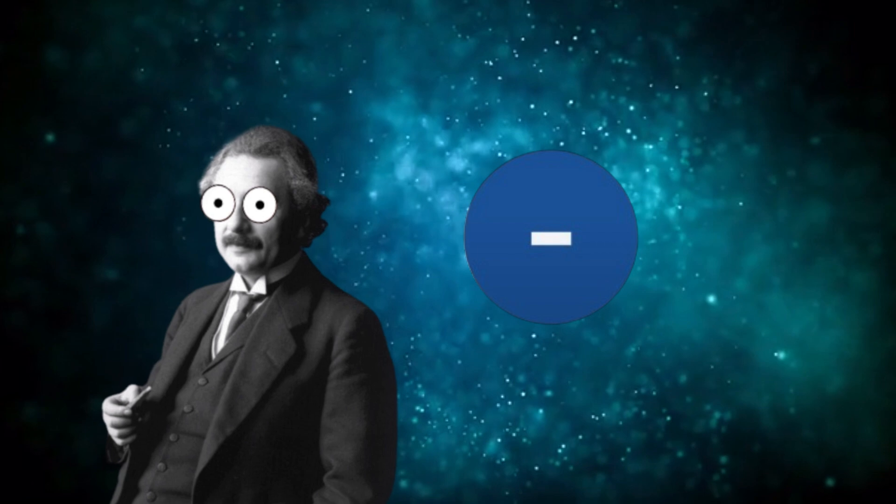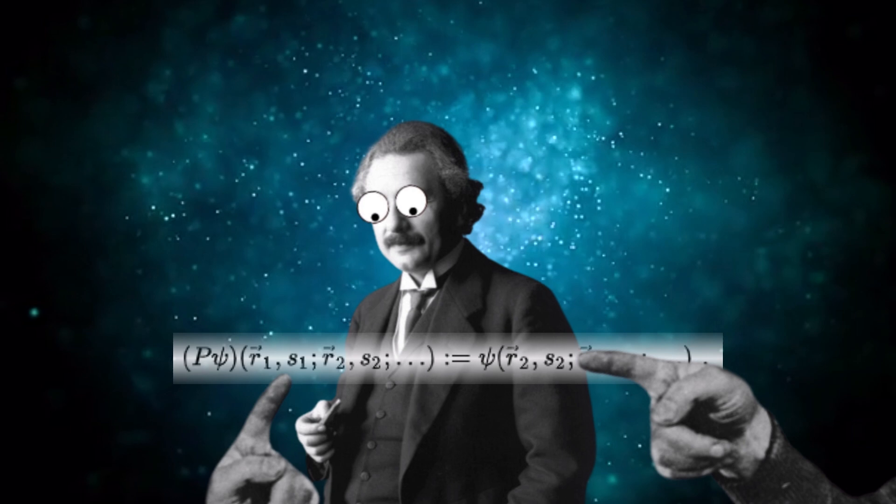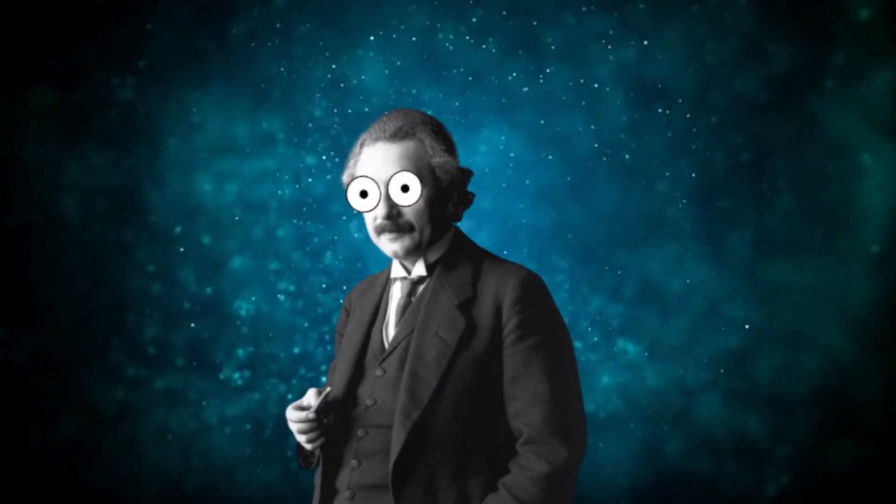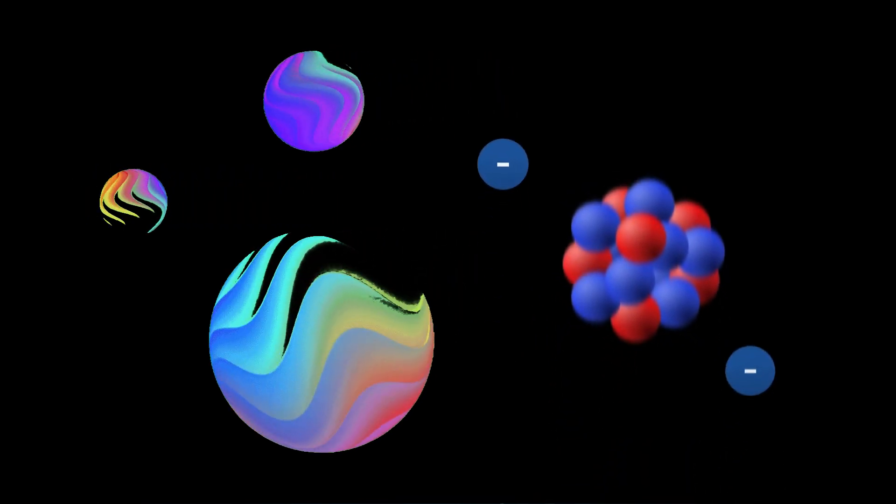Since electrons are fermions, their wave functions must be anti-symmetric if you exchange the space coordinates and spins of the electrons. This anti-symmetry of the wave functions means that electrons in an atom cannot overlap each other and therefore fill the volume of the atom.